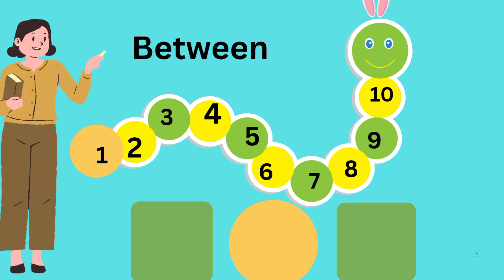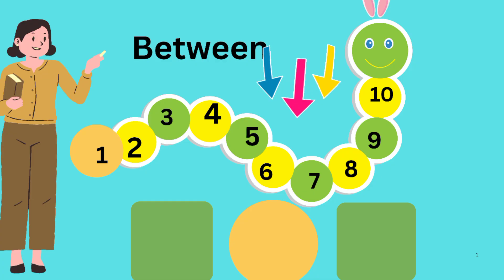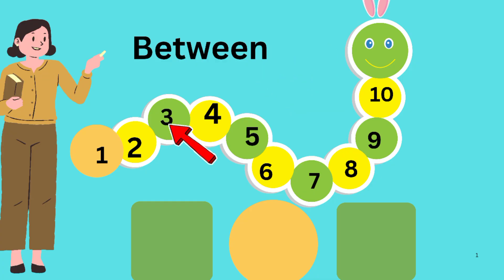Let's do between numbers from 1 to 10. Look at the caterpillar. 1, 2, 3, 4, 5, 6, 7, 8, 9, 10. What comes between 2 and 4?